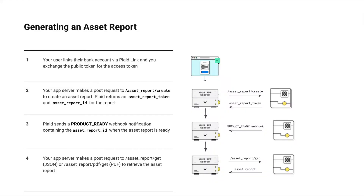This diagram gives a high-level overview of how the back-end assets integration works. Like all Plaid products, the first step after a user successfully connects their account is to exchange the item's public token for an access token. The next step is to call the asset report create endpoint with the access token or tokens for the borrower, which will return an asset report token.